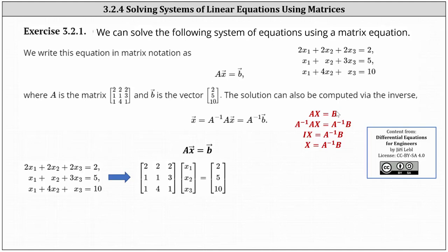To solve the matrix equation, we need to solve for matrix x. To do this, we multiply both sides of the equation by A inverse. On the left, A inverse times A is equal to I, the identity matrix, and I times x equals x, giving us x equals A inverse times B. A inverse times vector B will give us the solution to the system.